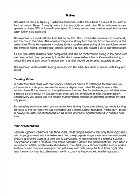The operator starts with the first dial on the left, holding a pendulum in one hand and the dial in the other. The operator begins to slowly turn the dial from 0 to 10. What the operator is looking for is a confirmation swing of the pendulum. When that swing is noted, the operator ceases tuning that dial and leaves it at its current location. If a full turn of the dial has been completed and still no confirmation swing has been noted, simply tune the dial in reverse from 10 to 0 until a swing is noted. If there is still no confirmation, that dial should be set and recorded as 0. The operator continues the tuning process with the other two dials in series until they are all set.